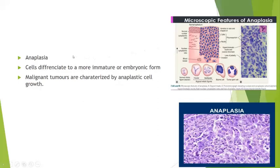Now let's discuss anaplasia. In anaplasia, cells differentiate to a more immature or embryonic form. Malignant tumors are characterized by anaplastic cell growth. Microscopically, there is pleomorphism — variation in size and shape of cells and nuclei — hyperchromatic nuclei, coarse chromatin, and loss of polarity.